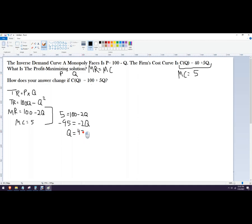So 47.5 is the quantity. Now I'm going to take that quantity, because I'm a monopoly, and plug it into that function. That gives me the price that I can charge. Okay, so that price is 100 minus 47.5.